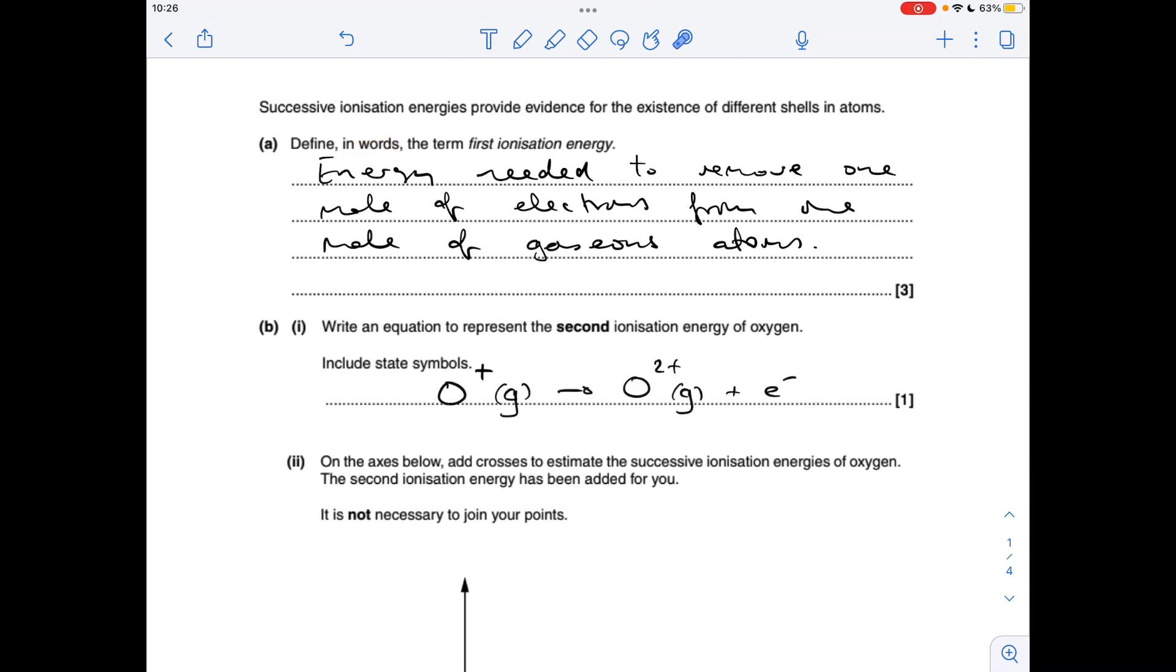Equation for the second ionisation energy of oxygen so we're starting with the one plus gaseous ion and we're going to the two plus gaseous ion.